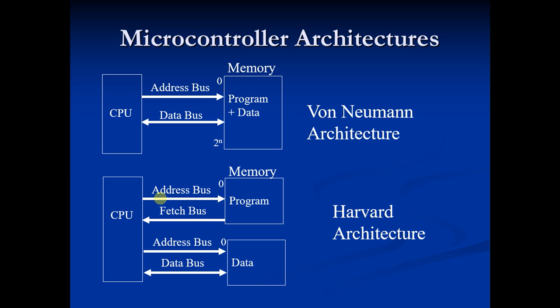The basic difference is in how program and data are accessed. In Harvard architecture, we can get program and data within one cycle, whereas von Neumann requires two separate cycles.